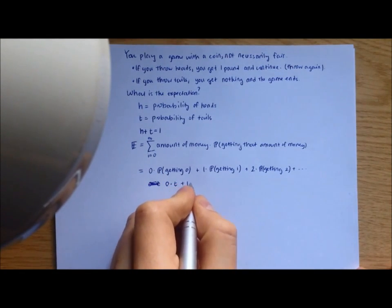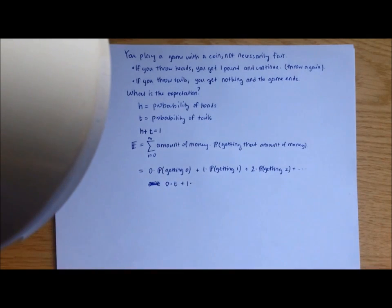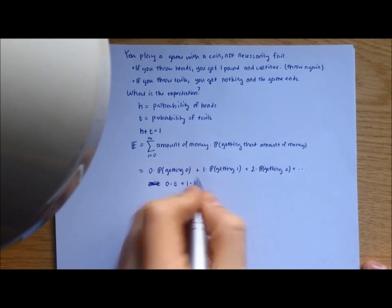The second term, we're going to get one times the probability of getting one. Well, there's only one way of getting one. You have to throw one head and then a tail right after that. So we're going to get h times t.